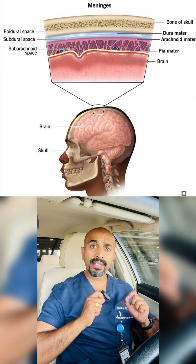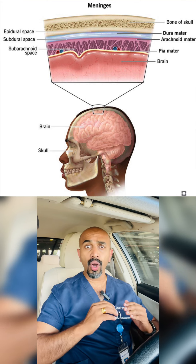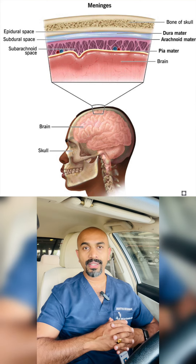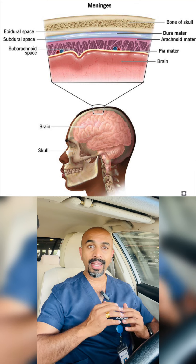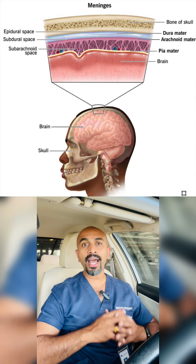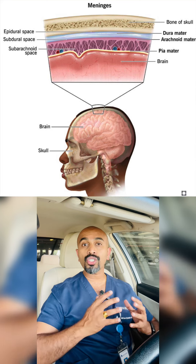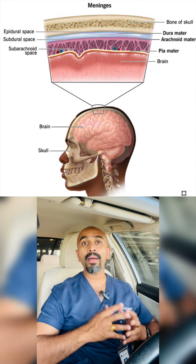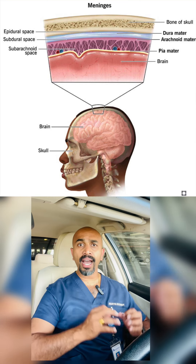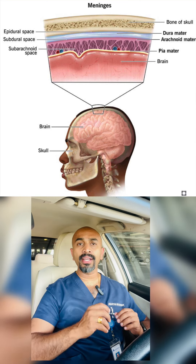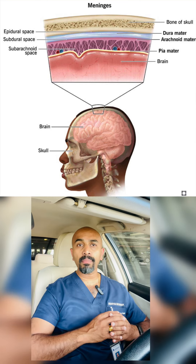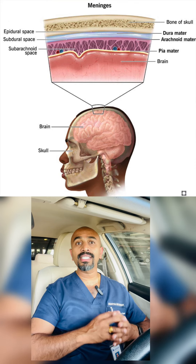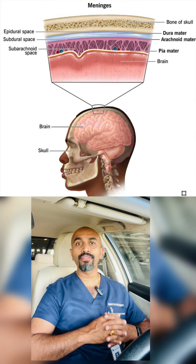The layer in the middle, or under the dura mater, is the arachnoid mater. The inner layer that is under the arachnoid mater, or close to the brain, is called the pia mater. The space between the arachnoid mater and pia mater is the subarachnoid space, and it is filled with cerebrospinal fluid.